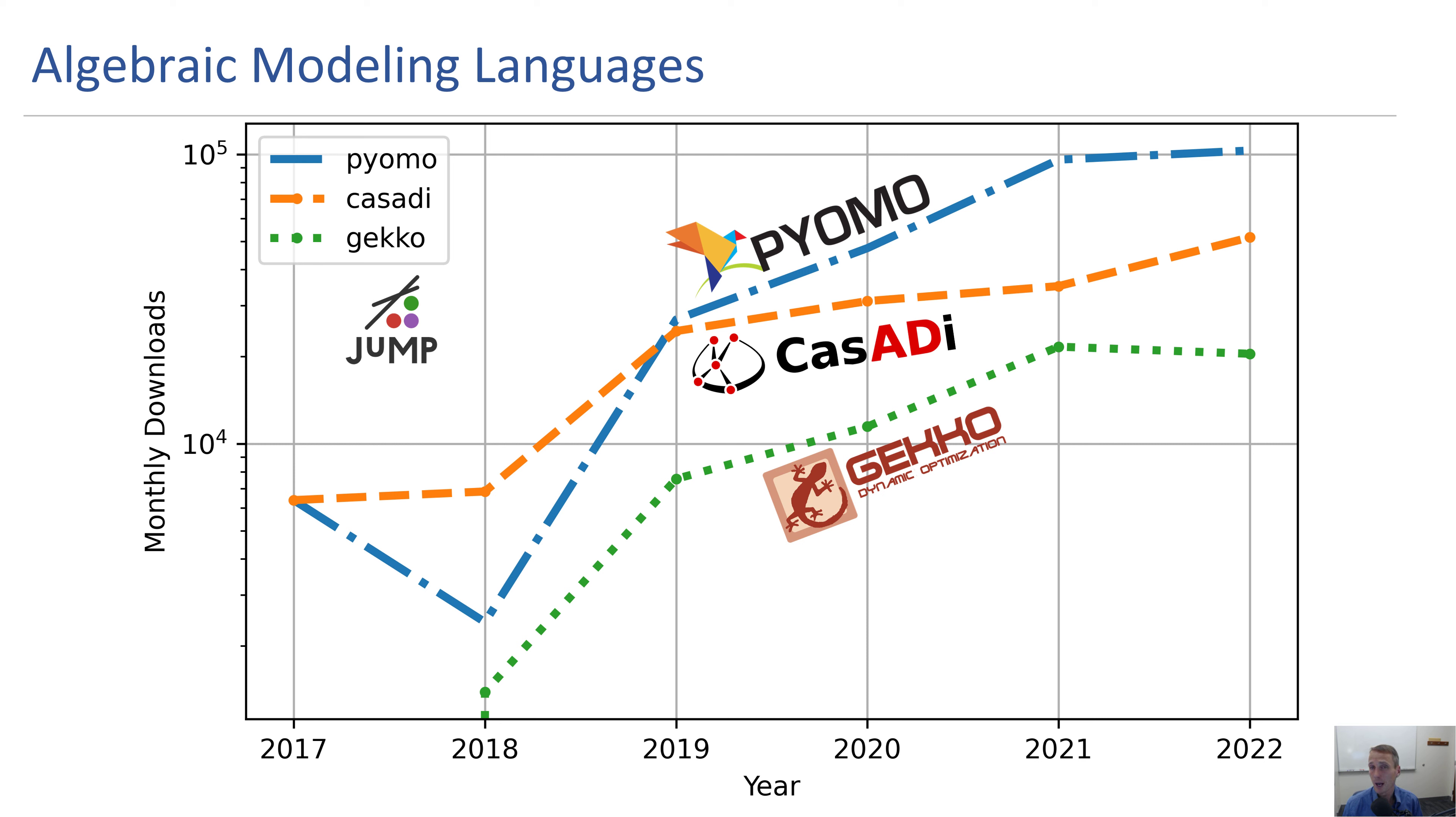Let's look at some of the common algebraic modeling languages. This is on a log scale in terms of monthly downloads. You can see three that we've highlighted here. We weren't able to get monthly results from JuMP but got current ones, so we have Pyomo, CasADi and GEKKO that we've compared.